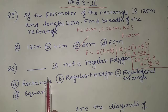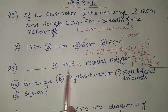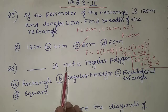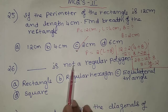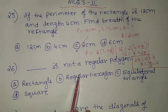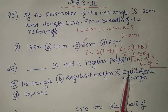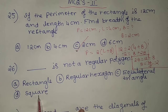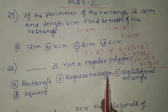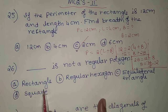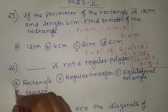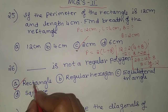The 26th problem: which is not a regular polygon? Options are rectangle, regular hexagon, equilateral triangle, and square. Regular hexagon, equilateral triangle, and square are all regular polygons, but a rectangle is not a regular polygon. So rectangle is the correct answer.